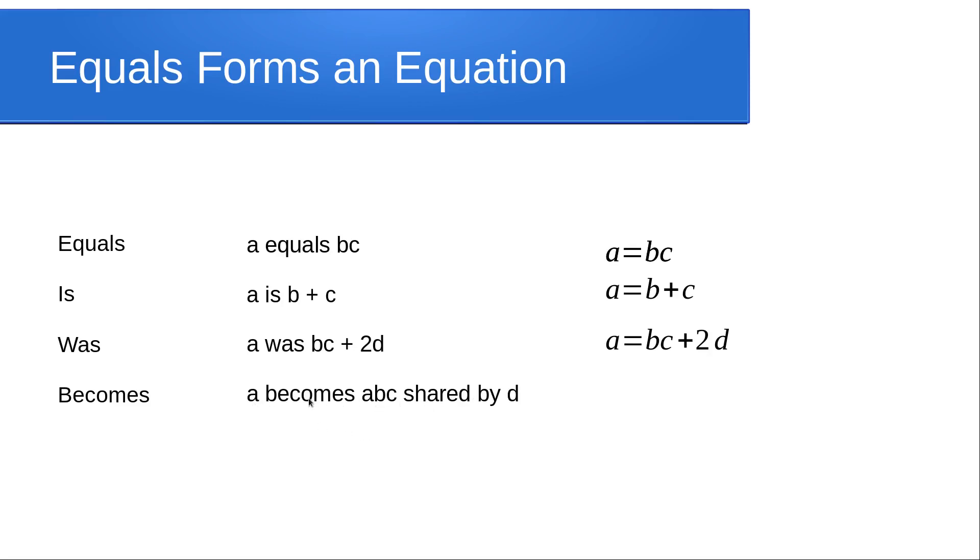Look at this, a bit more complicated. Becomes, we're going to change to an equals, and that's shared by. We're going to write this as a division or as a fraction: ABC over D. So we get A equals ABC over D, a much more complicated one there.